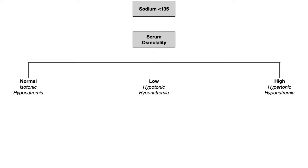If serum osmolality is normal, it's called isotonic hyponatremia — normal osmolality in the setting of low sodium. If serum osmolality is low, that is termed hypotonic hyponatremia, meaning low stuff in the serum with low sodium. And if serum osmolality is high, that's called hypertonic hyponatremia — lots of stuff in the serum, but sodium is still measured as low.